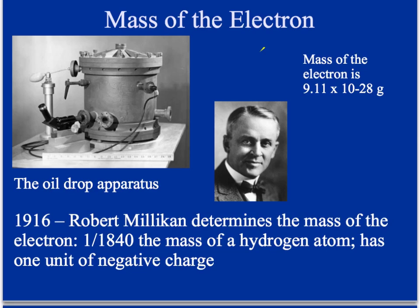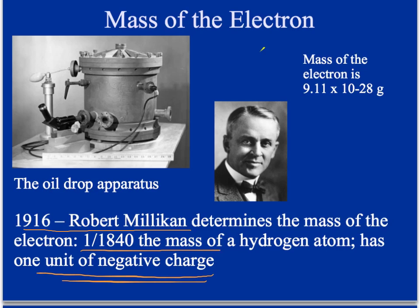After the electron was discovered by J.J. Thomson as a negatively charged particle, the next discovery came in 1916 by Robert Millikan, who determined the mass of an electron. The mass of an electron is 1/1840th the mass of a hydrogen atom — not half, not a quarter, almost one two-thousandth. It has one unit of negative charge. It's very small, much smaller than a hydrogen atom or proton. The mass of the electron is 9.11 times 10 to the negative 28th grams — a very, very small particle.